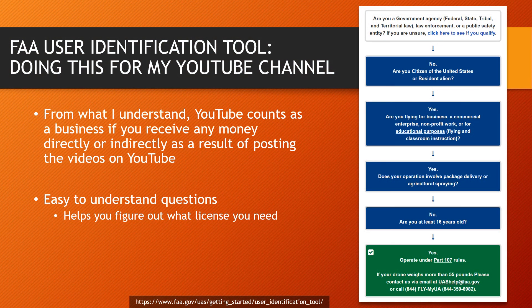One of the first things you need to do is go to the FAA website and use the user identification tool. As best I understand, YouTube counts as Part 107 because whether or not you make money directly or indirectly counts as a business. So you need to have this license — it's no longer considered just for fun if you're getting any type of funding. If you're monetizing on YouTube or getting side jobs from your videos, you have to get the Part 107 license.